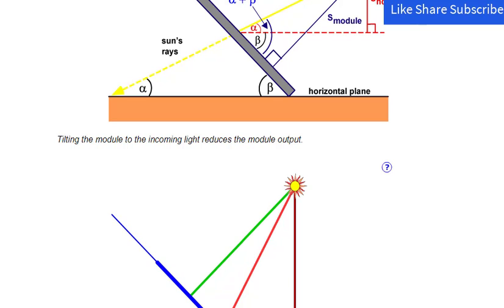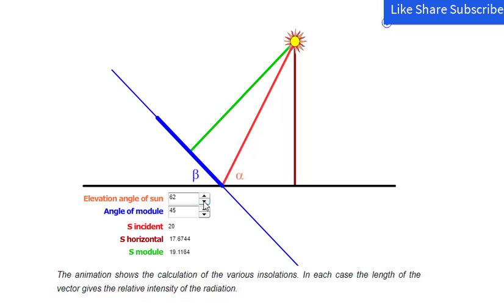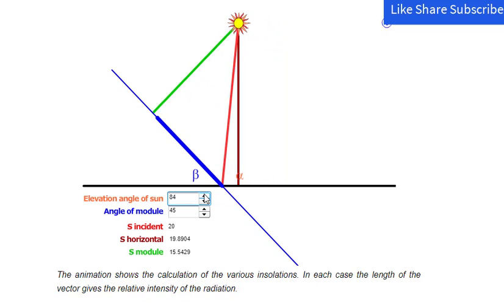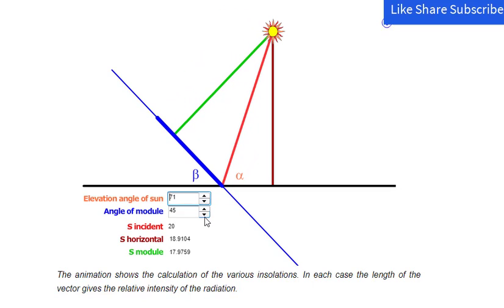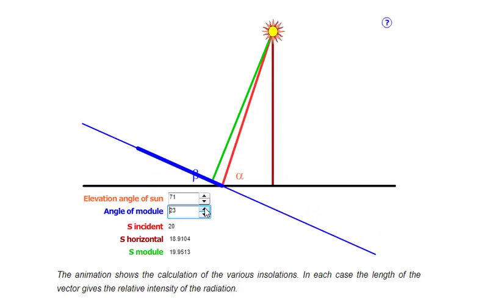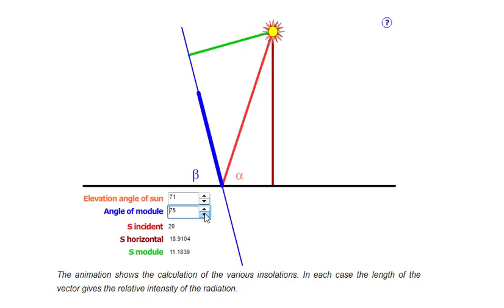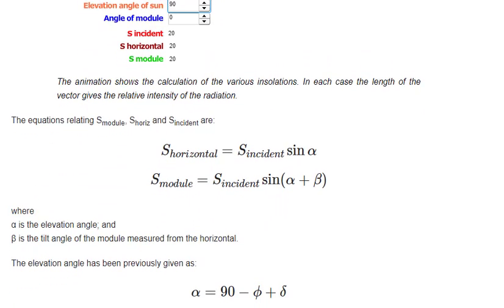The amount of solar radiation incident on a tilted module surface is the component of the incident solar radiation which is perpendicular to the module surface. The following figure shows how to calculate the radiation incident on a tilted surface S_module, given either the solar radiation measured on horizontal surface S_horiz, or the solar radiation measured perpendicular to the sun S_incident. Tilting the module relative to the incoming light reduces the module output. The animation shows the calculation of the various insolations, where the length of each vector gives the relative intensity of the radiation. The equations relating S_module, S_horiz, and S_incident are given where alpha is the elevation angle and beta is the tilt angle of the module measured from the horizontal.